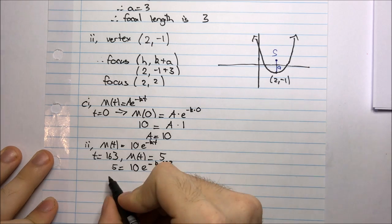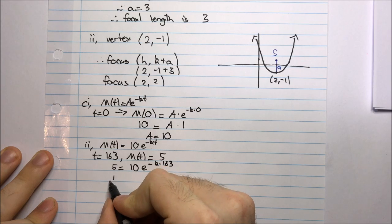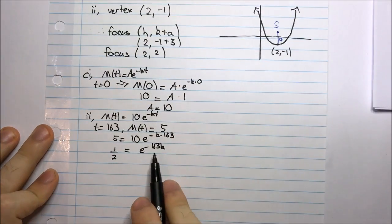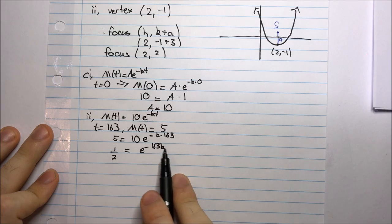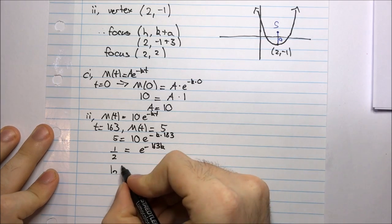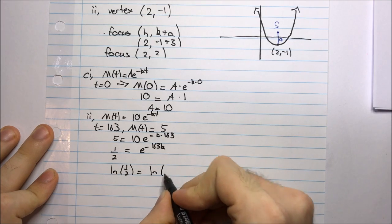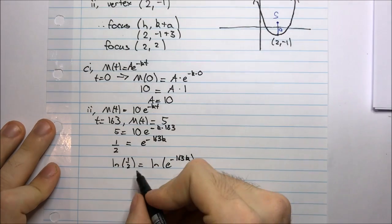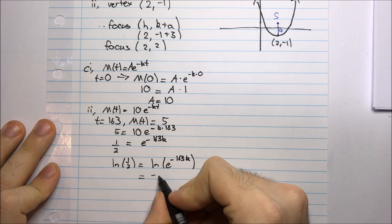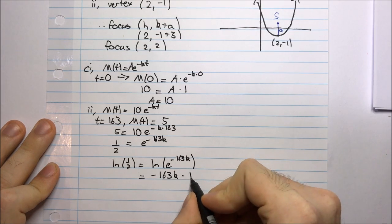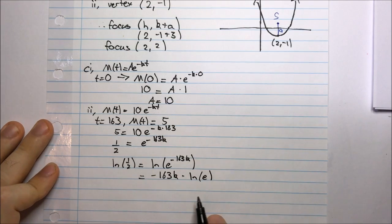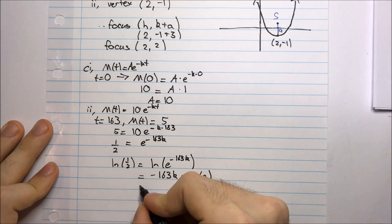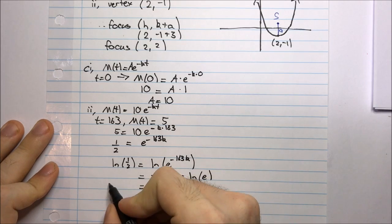I need to solve for k. Divide everything by 10, so I get one half equals e to the negative 163k. My unknown is in the exponent, so I have to use a logarithm. Taking the natural log of both sides: ln(1/2) equals ln(e to the negative 163k). Using log laws, bringing the power down: that's negative 163k times ln(e). Since ln(e) equals 1, this is negative 163k equals ln(1/2).